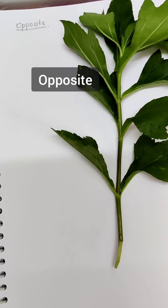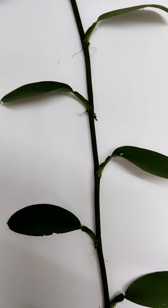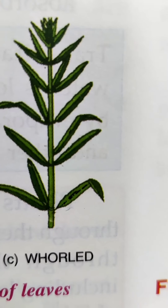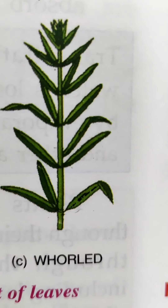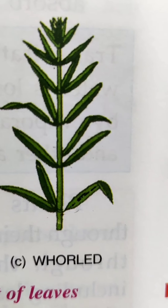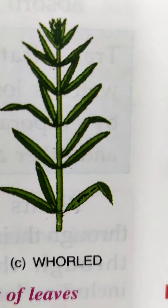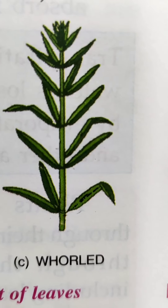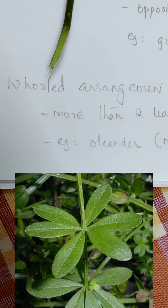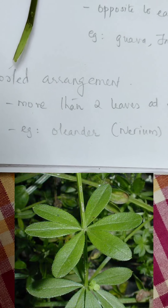If you look around you can see different kinds of arrangement of leaves on the plant. So these are two types of arrangement. The third one is the whorled arrangement, where you have more than two leaves attached at each node, arranged in a whorl.